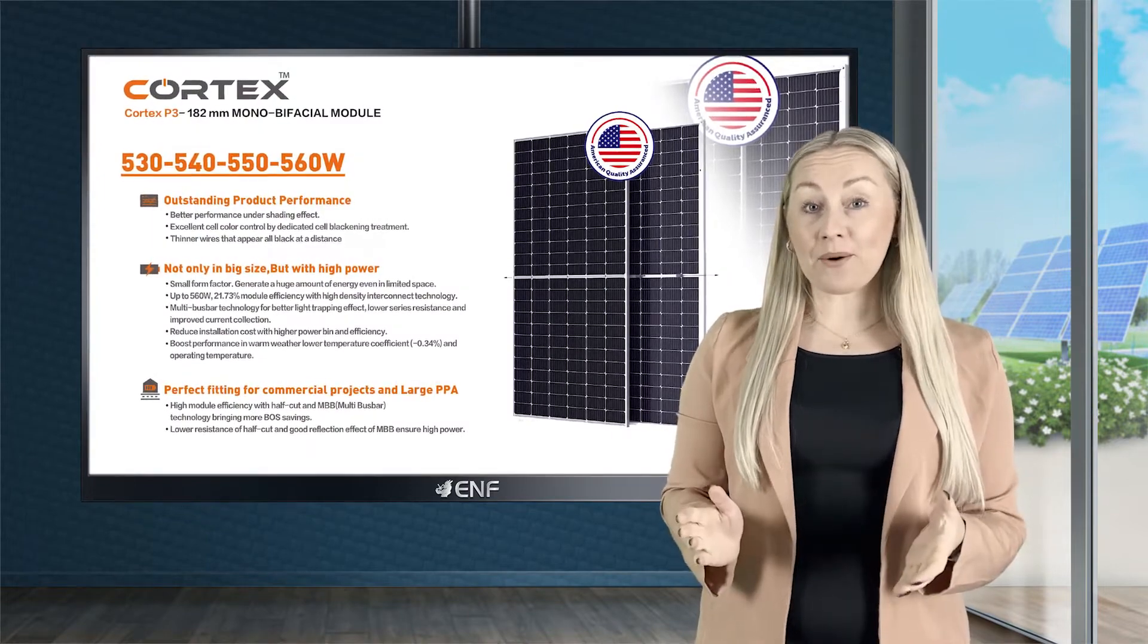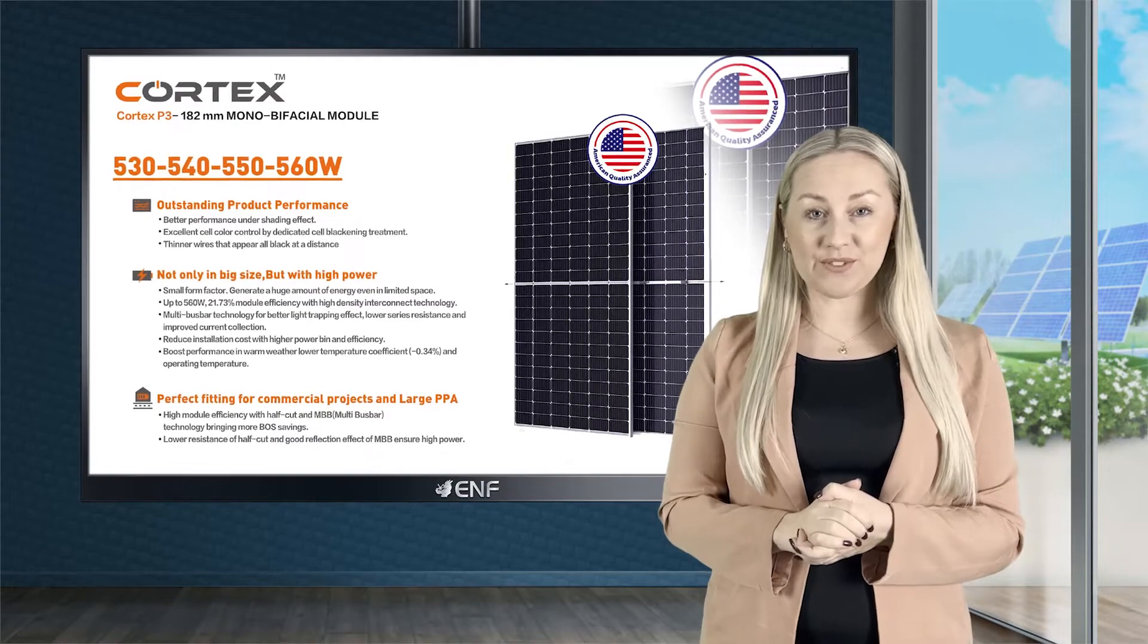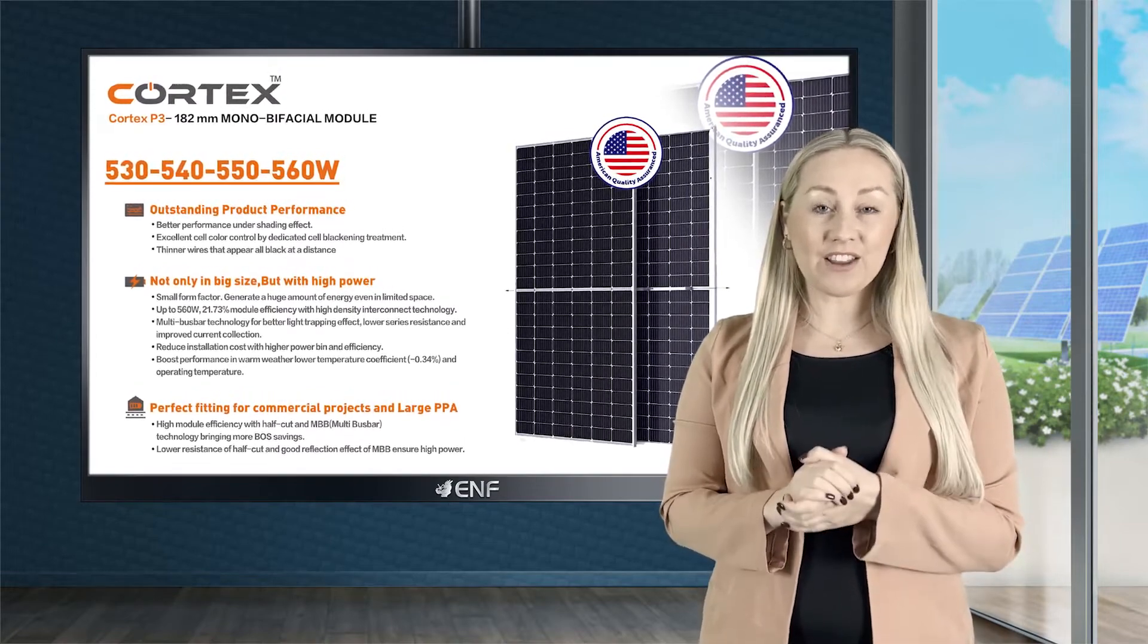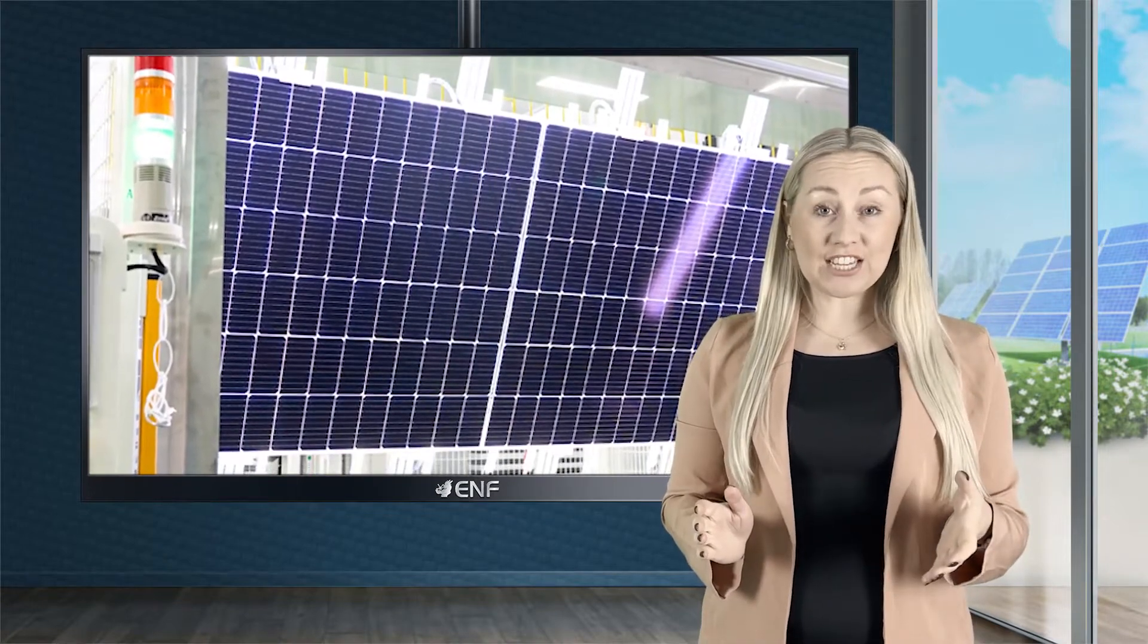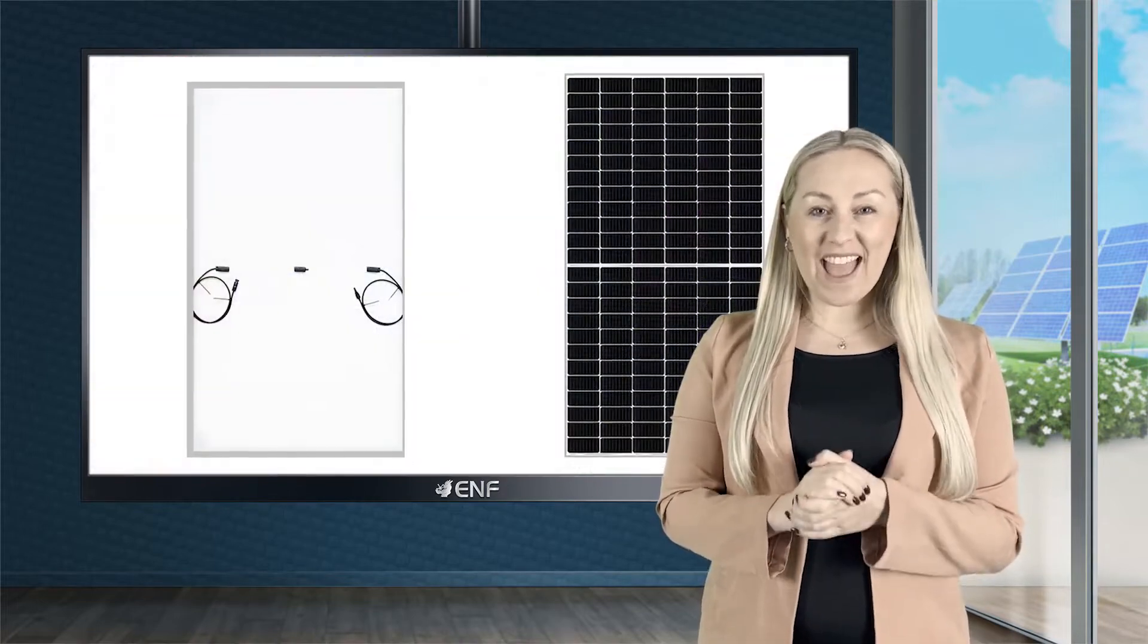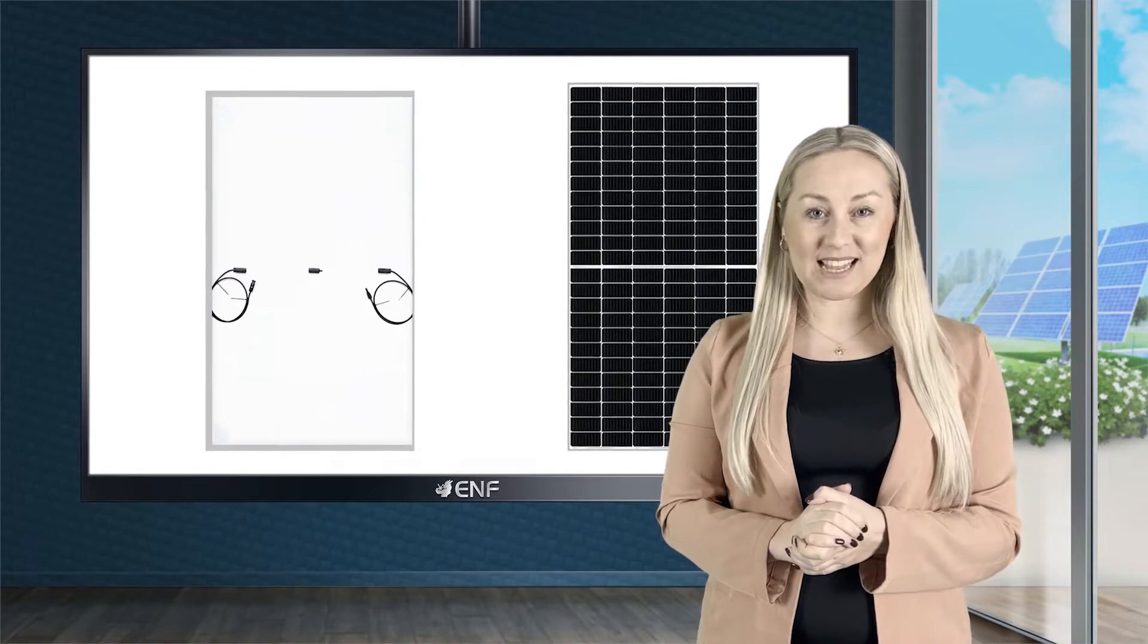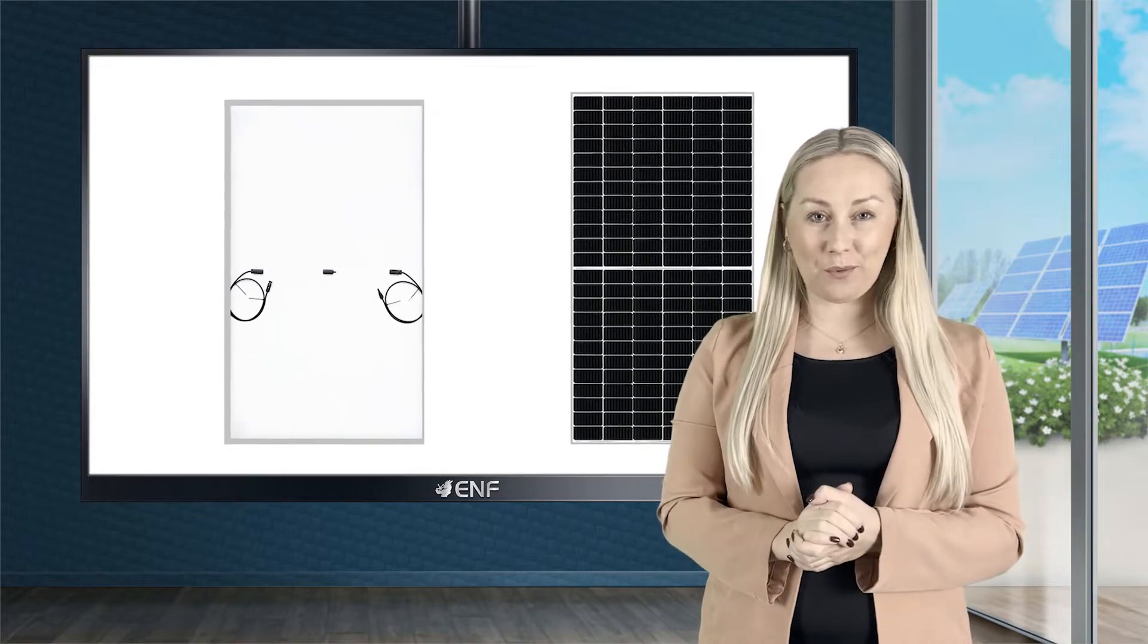With these in mind, Omnis Power has designed the Cortex P3 bifacial 530-560W solar module series that combines advanced technologies such as bifacial design, half-cut cells architecture, passivated emitter and rear contact technology, and multi-bus bar design to offer excellent conversion efficiency of up to 21.73% and maximum power output of up to 560W.